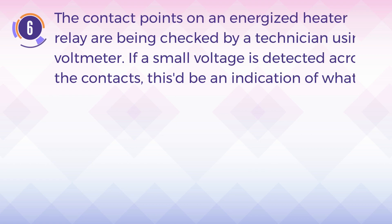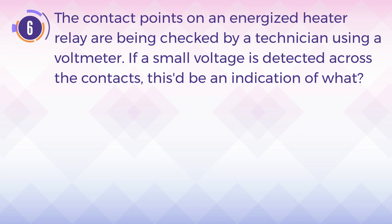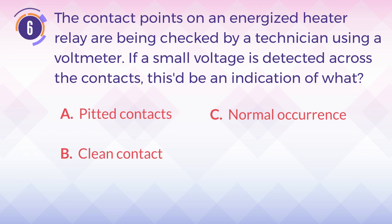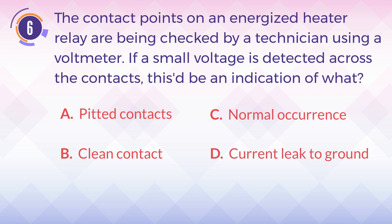Number 6. The contact points on an energized heater relay are being checked by a technician using a voltmeter. If a small voltage is detected across the contacts, this would be an indication of what? A. Pitted contacts. B. Clean contacts. C. Normal occurrence. D. Current leak to ground.